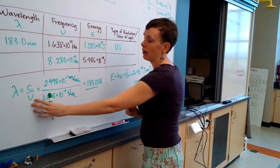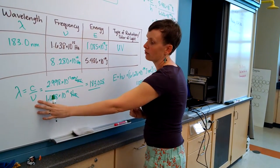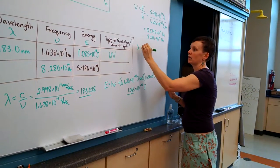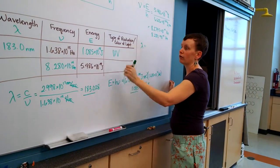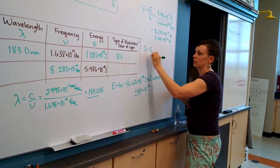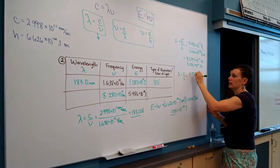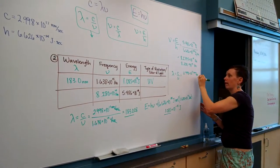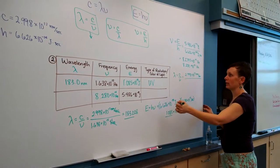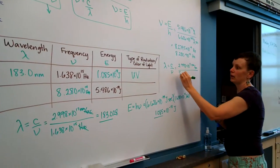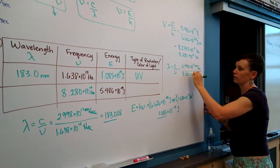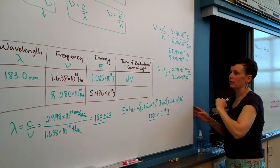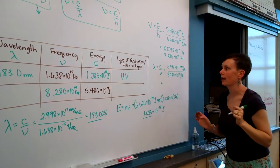Now I can use that similarly to how I use this here to find the wavelength of our light. Wavelength equals C over frequency, so 2.998 times 10 to the 17th nanometers per second, divided by the frequency that we just calculated, 8.280 times 10 to the 14th hertz. The per second and the hertz cancel out, giving us nanometers, and we'll type that one in.